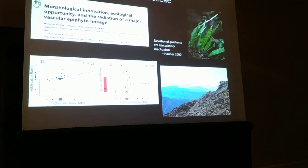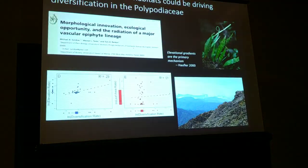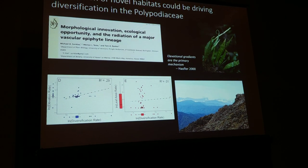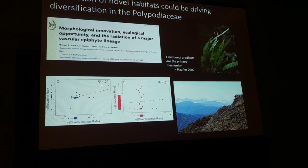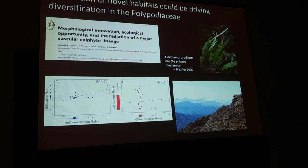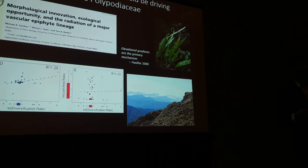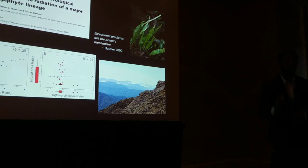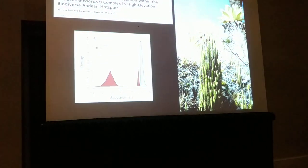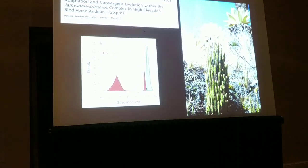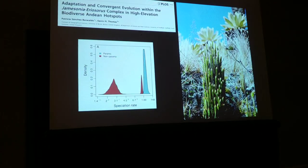If we take a finer scale view within the Polypodiaceae, Sundu and colleagues found that rates of morphological evolution are decoupled from diversification rates. Rather, rates of elevational change are more coupled with diversification rates. This was hypothesized by Hofler in a 2000 paper—the idea that the exploration of novel habitats is promoting diversification in ferns through the exploration of elevation in tropical environments. Additionally, in the Pteridaceae, it was demonstrated that high-elevation species of Jamesonia are speciating at faster rates compared to low-elevation species.